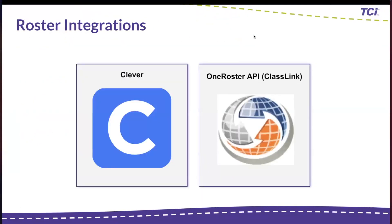If you're not already familiar with our integrations, we have two very popular roster integrations supported: Clever and OneRoster. You're probably familiar with ClassLink, one of the more popular applications using OneRoster, but more and more we're seeing other applications supporting the OneRoster API — sometimes directly from the student information system. Aries, Infinite Campus, and Skyward are some SIS platforms that have created support directly for the OneRoster API so you don't have to go through ClassLink. Upwards of 80–90% of our accounts are created with integrations, so I definitely recommend looking into them if you're not already using them.